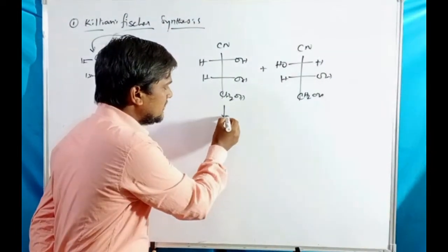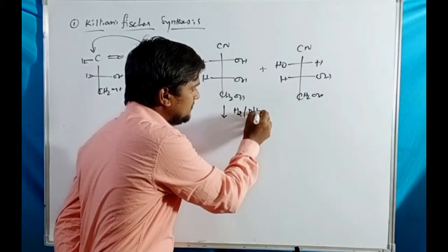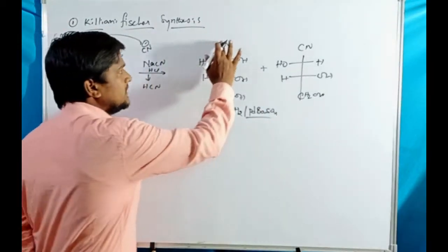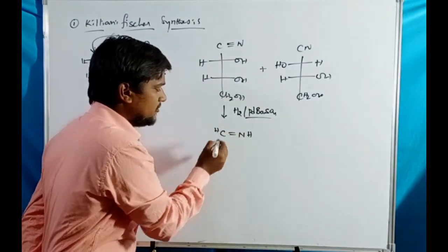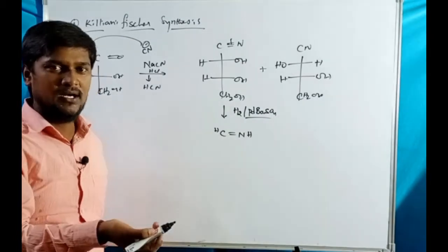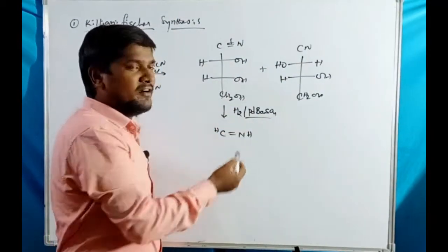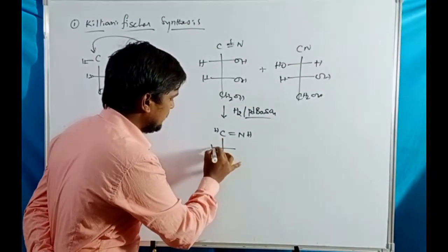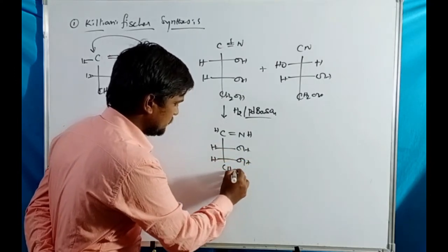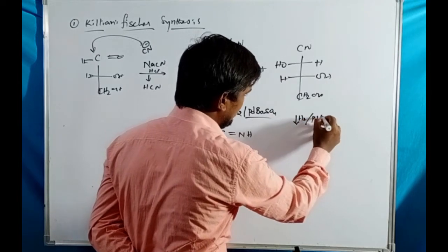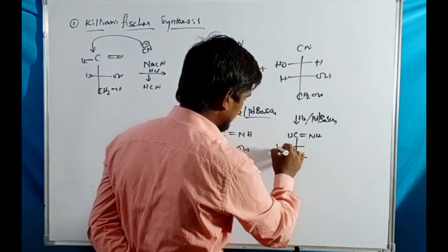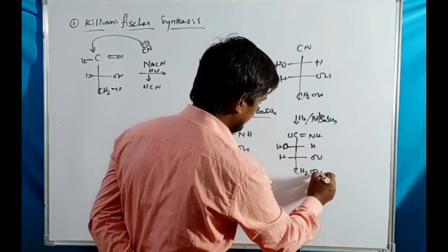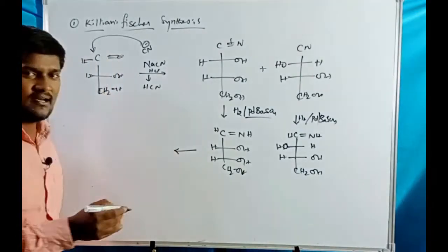In the next step, the cyanide undergoes hydrogenolysis in presence of H2 with palladium-barium sulfate — that is Lindlar's catalyst. The cyanide triple bond becomes a double bond with addition of hydrogen, forming an imine. Similarly, the second isomer also undergoes H2/Pd-BaSO4 to form the same type of imine intermediate, followed by hydrolysis.